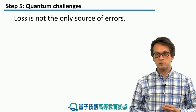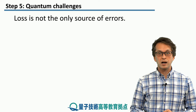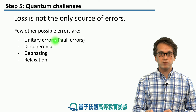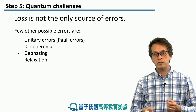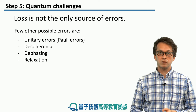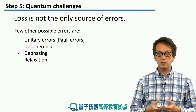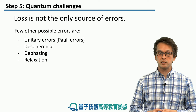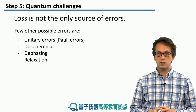And photon loss is only one source of error we have to contend with in long-distance quantum communication. Other sources include unitary errors such as Pauli errors, where we can randomly flip the state of our photons, or Z errors, where we introduce some phase to the photons. And then there is a whole bunch of non-unitary errors such as decoherence, dephasing, and relaxation — most of which we don't have to deal with in classical communication.